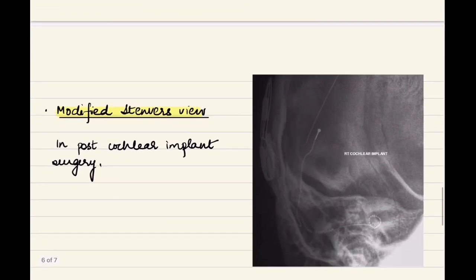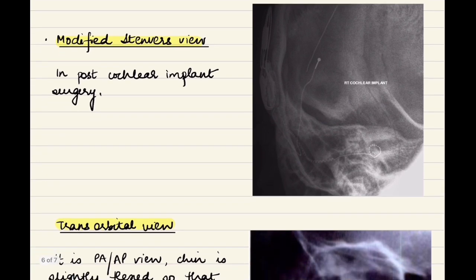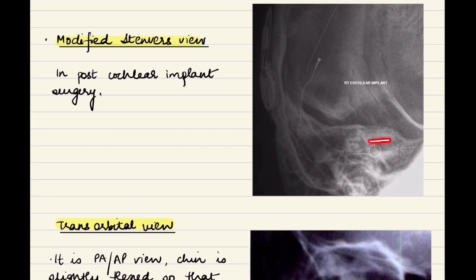There is a modification known as the modified Stenvers view, done to check the position of electrodes after cochlear implant surgery. In this view, we see more of the labyrinth and less of the mastoid air cells. On close inspection, we can identify the internal auditory canal, vestibule, lateral semicircular canal, superior semicircular canal, arcuate eminence, and the electrodes coiled in the cochlea.